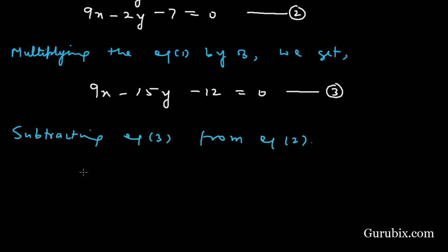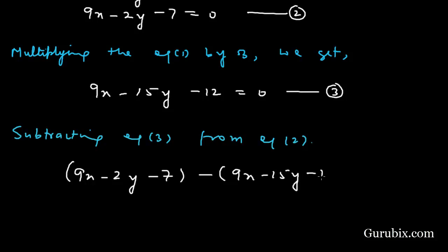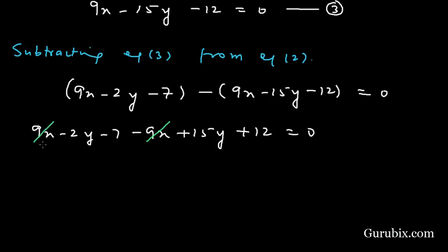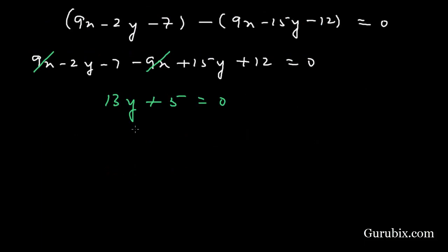Subtracting equation number 3 from equation number 2: (9x − 2y − 7) − (9x − 15y − 12) = 0. This gives 9x − 2y − 7 − 9x + 15y + 12 = 0. The 9x terms cancel out. 15y − 2y = 13y, and 12 − 7 = 5, so 13y + 5 = 0.